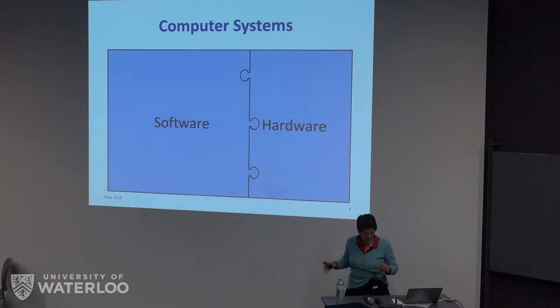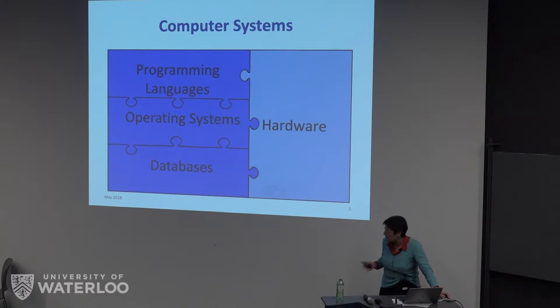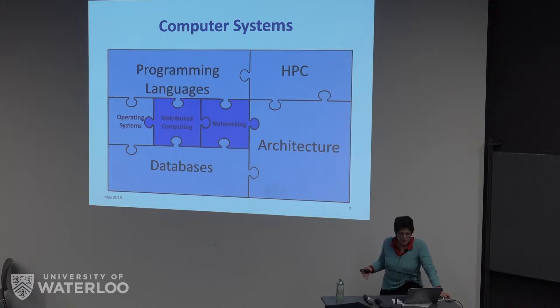Fairly soon after we started building devices, we split and said hardware and software are different areas. Then the database folks and the programming languages folks decided their concerns were different from those of the operating systems folks. On the architecture side, we saw a class emerge thinking about high-performance computing as different from conventional hardware. Then operating systems started to splinter into distributed computing and networking, which oddly enough grew into different communities.